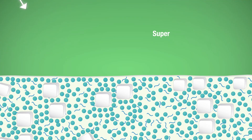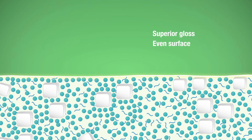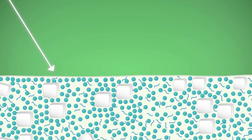Superior gloss improvement is achieved when the ultrafine enriched particles evenly fill the paint surface, intensifying its light reflection. Despite only partially replacing the titanium dioxide and binders, Enrich succeeds in maintaining the desired level of hiding power.